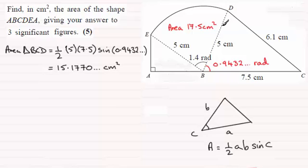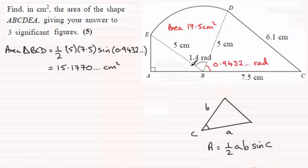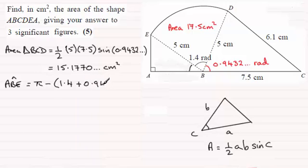Now I've got the area of that triangle, I'll work out the area of triangle ABE. I know the angle at B in that triangle — it's pi radians (half a turn) minus the other two angles. So angle ABE = π − (1.4 + 0.9432) radians. Doing that on your calculator gives 0.7983 radians.